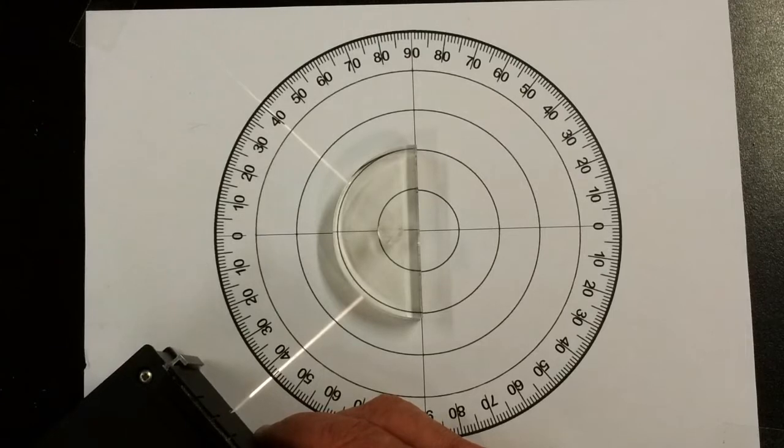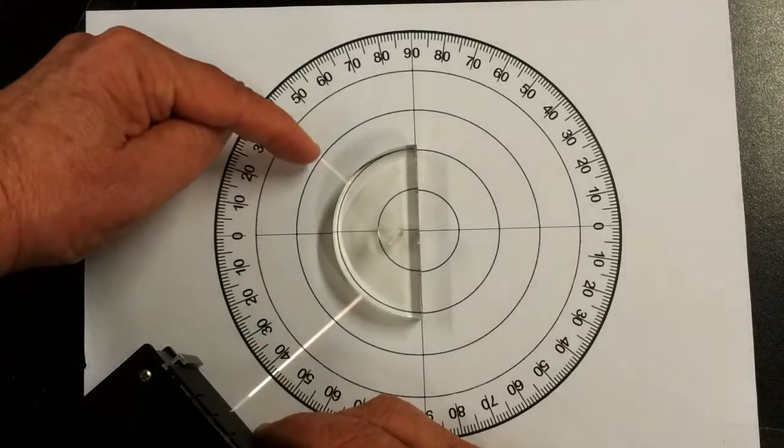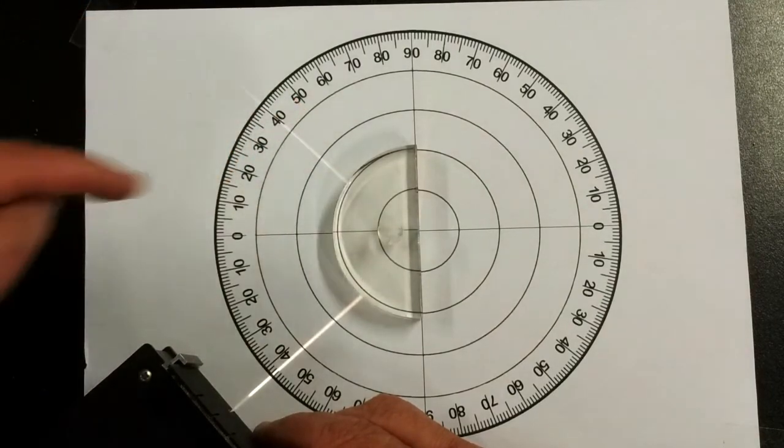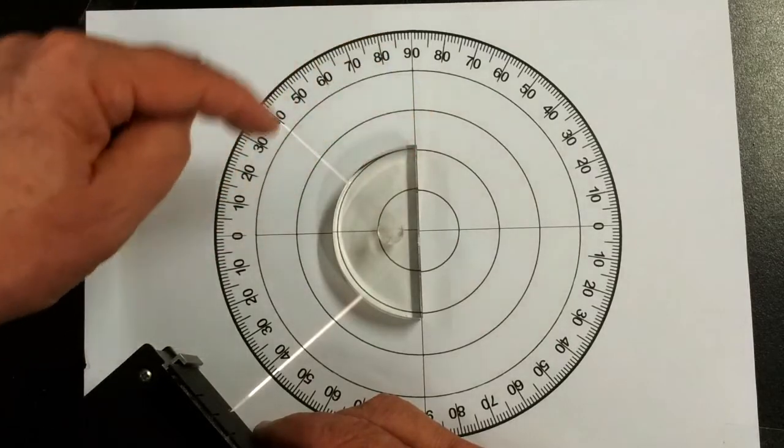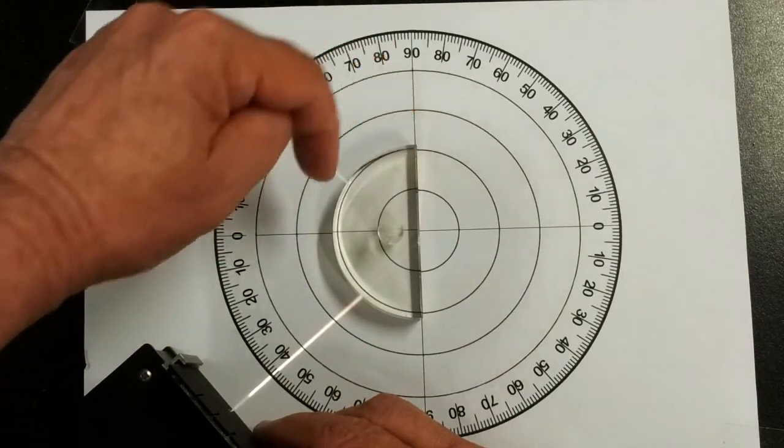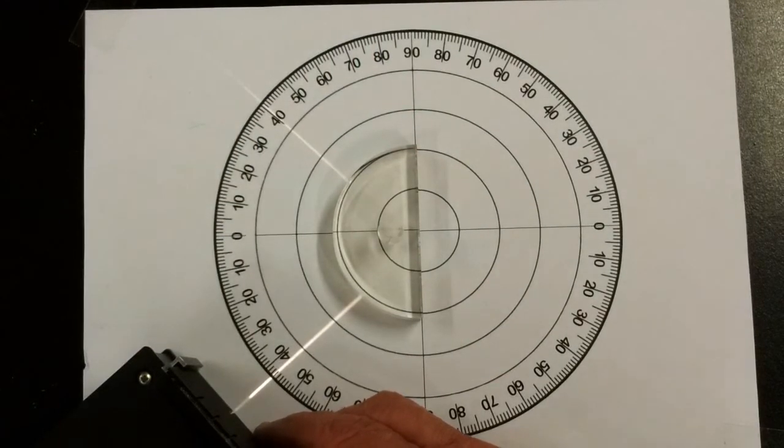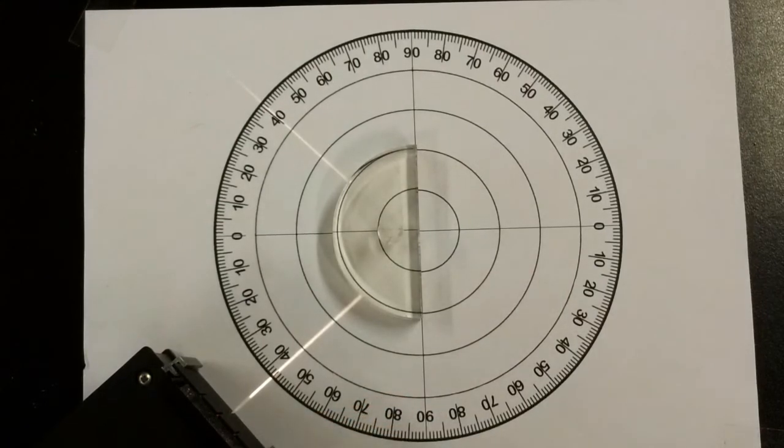Now that is what we call the critical angle and what it's doing is producing total internal reflection. In other words, all of the light - you can just see a little bit there coming out still - all of the light is refracted inside, so this is our critical angle.